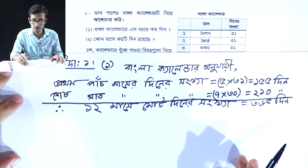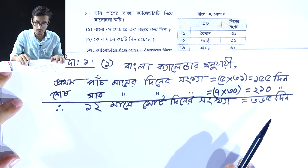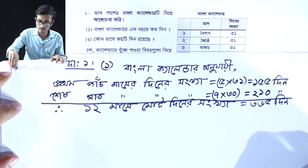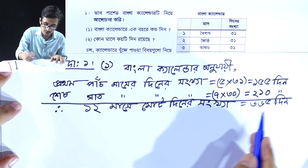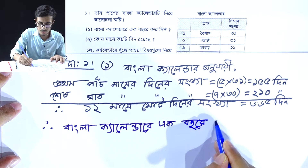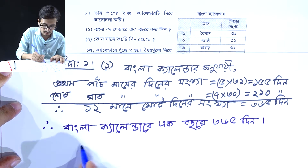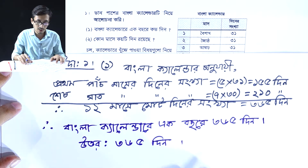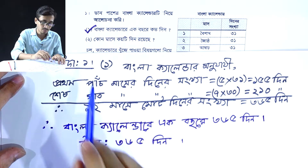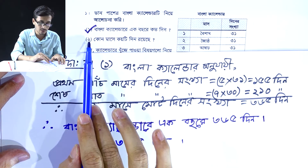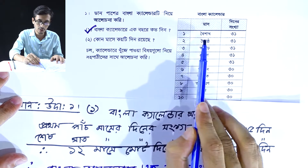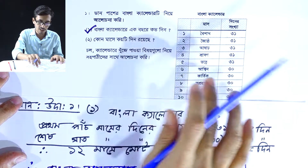Bangla calendar — 35 days have passed. That is the first question we were given. In the Bangla calendar, the first number — how many days does the Bangla calendar count? Let us now see that.